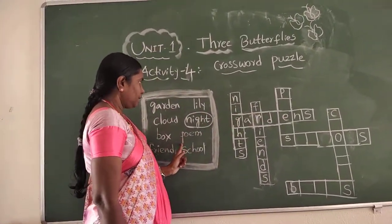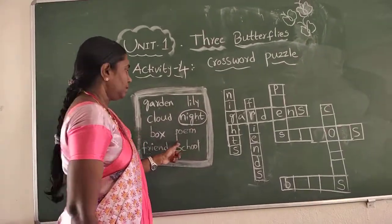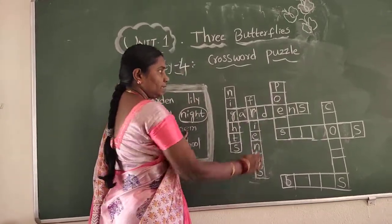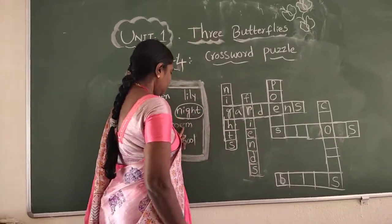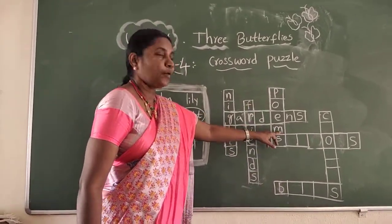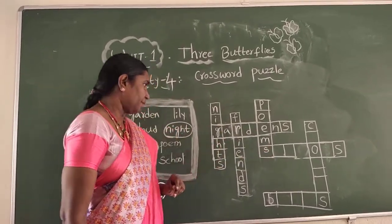And coming to the next line, P. We have to search for the P in the keyword board. So here we have P. Next letter is O. E already we have here. So poem, plural form poems. Yes, we have added S.